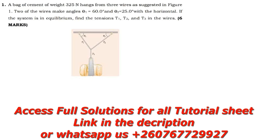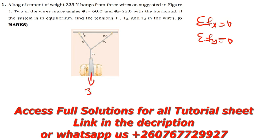I'm going to explain the concept of static equilibrium. When something is at equilibrium, the summation of all the forces in the x-direction should give you zero, and the summation of all the forces in the y-direction should also give you zero. That is the condition of static equilibrium — the object is not moving. Now I'm going to divide this into two parts.